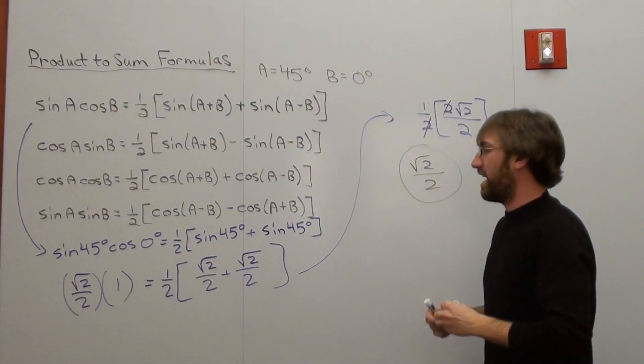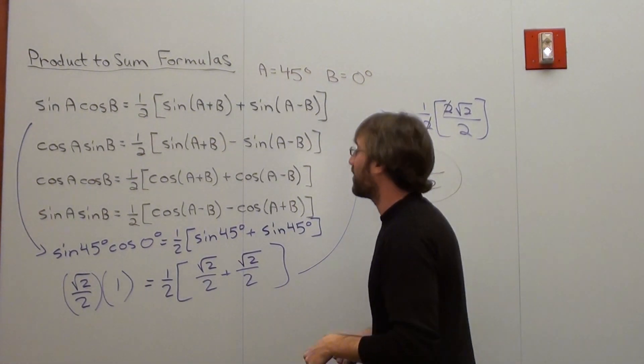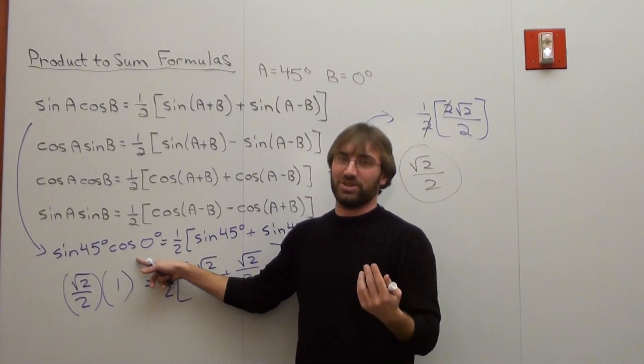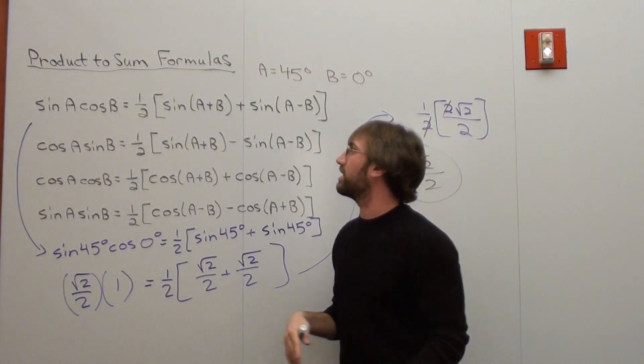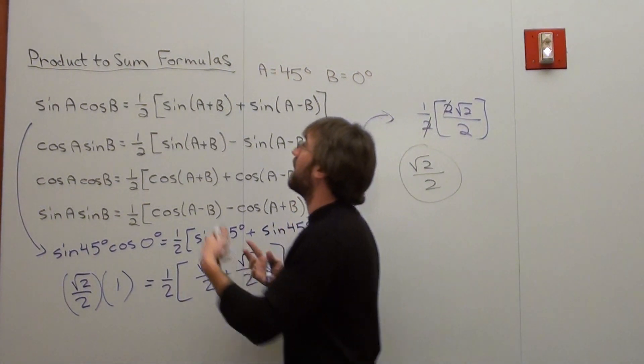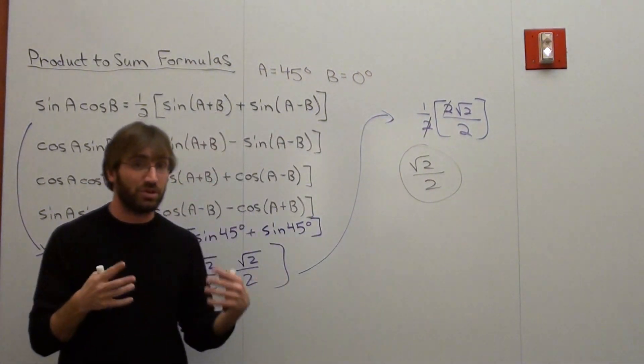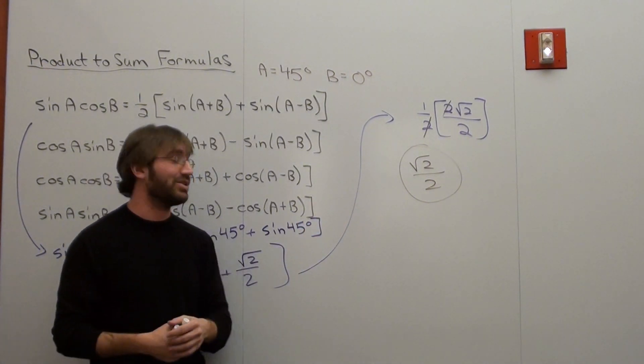So if somebody asks you what's the sine of 45 degrees times the cosine of zero degrees, you can either try to figure it out knowing what you know, or if it was something a little bit more difficult, not involving zero degrees, you can just simply use this formula right here and you'll get the answer. So we did a product to sum. We're going to do a sum to product formula afterwards.